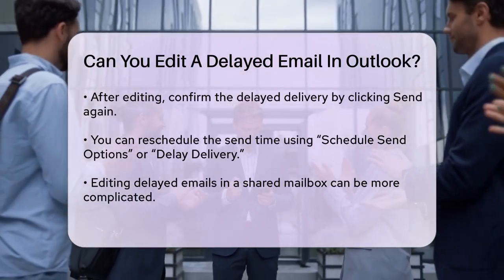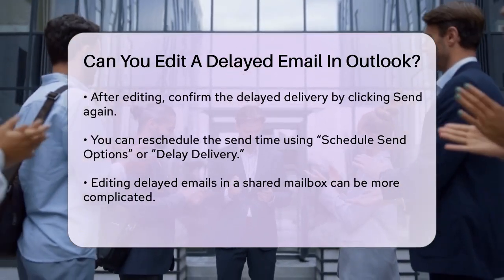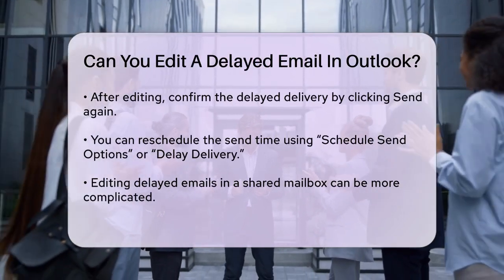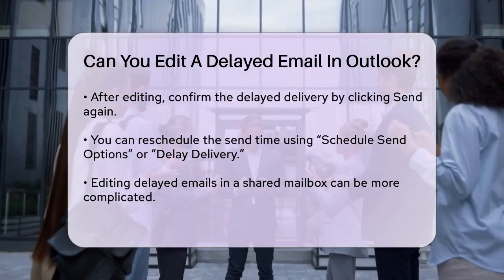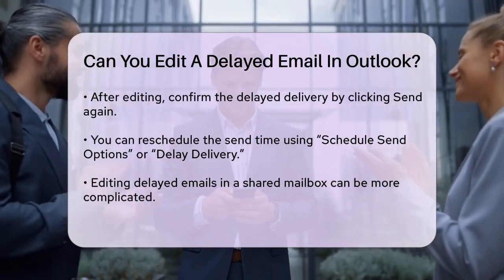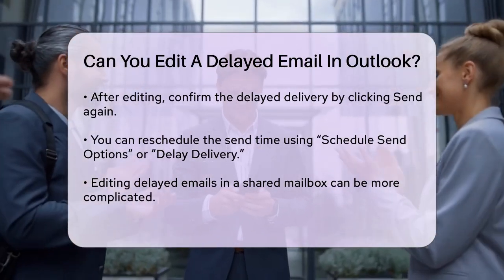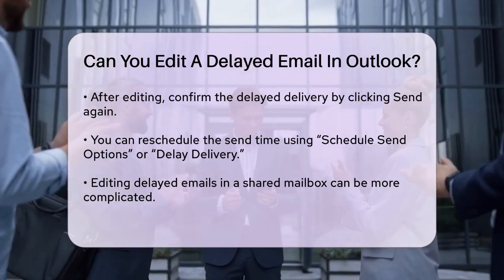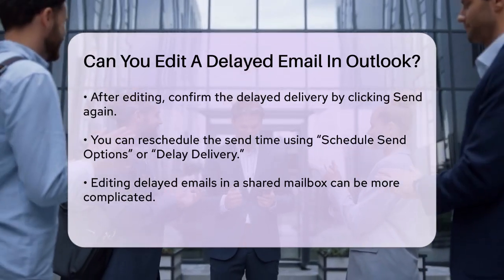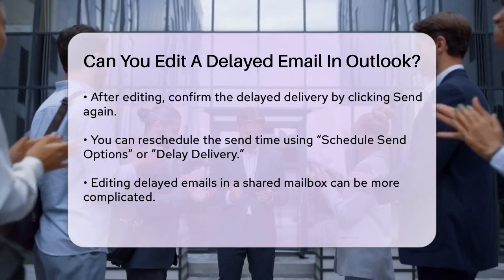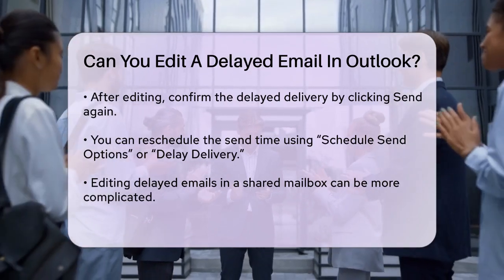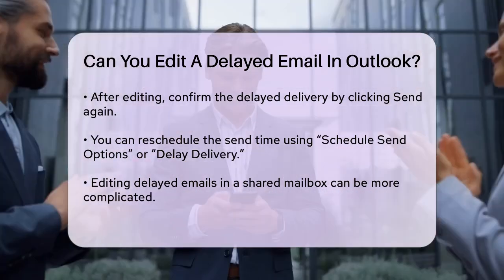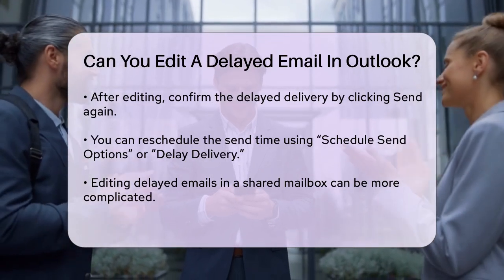Here's a step-by-step guide. Locate the email in your Outbox or Drafts folder and open the email. If it's in the Drafts folder, you might need to cancel the scheduled send time before editing. Make your changes. If you canceled the send time, reschedule it by using the Schedule Send Options or the Delay Delivery feature.